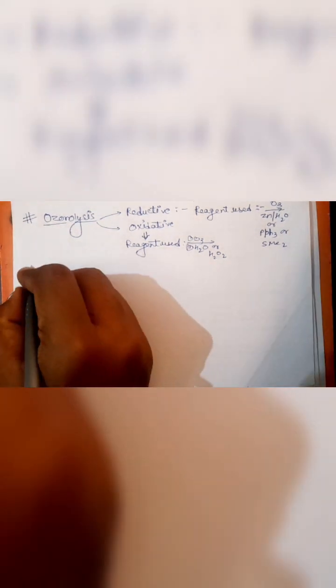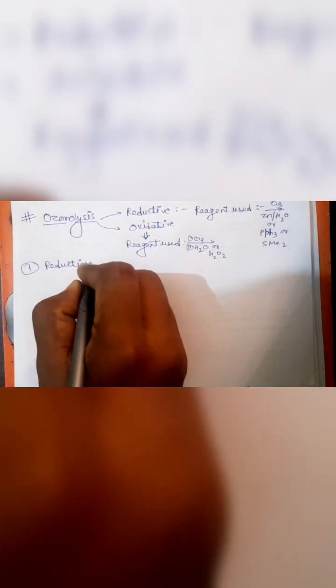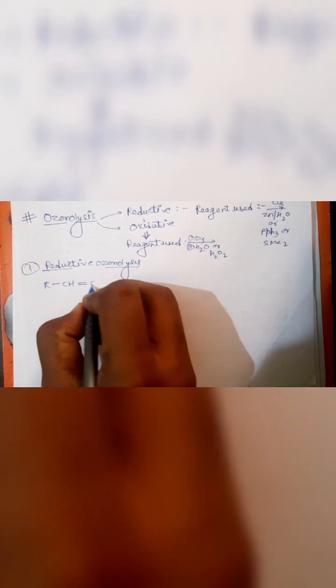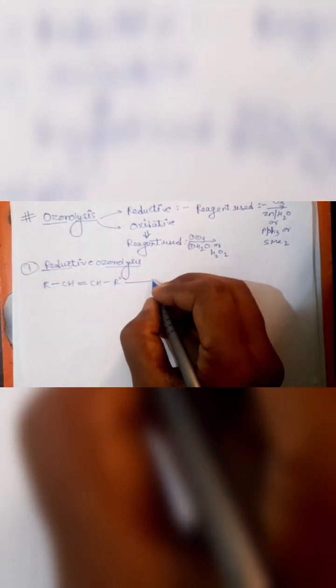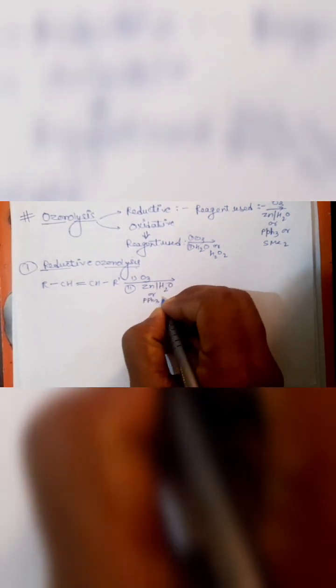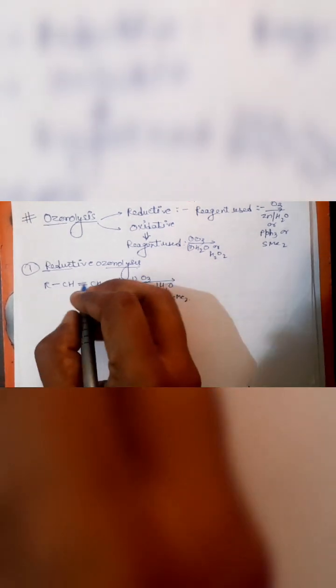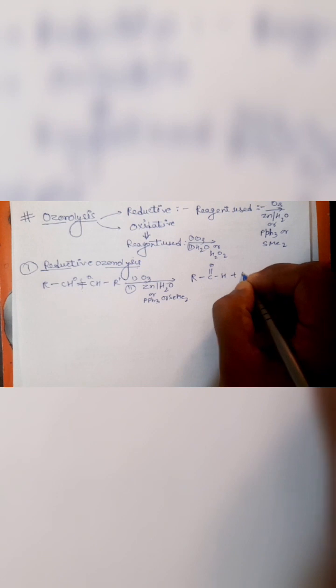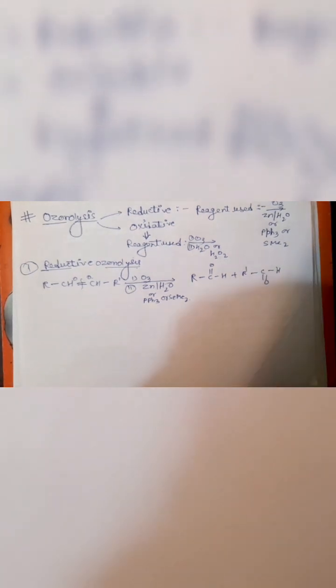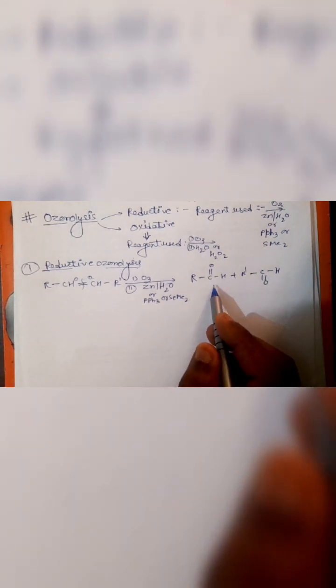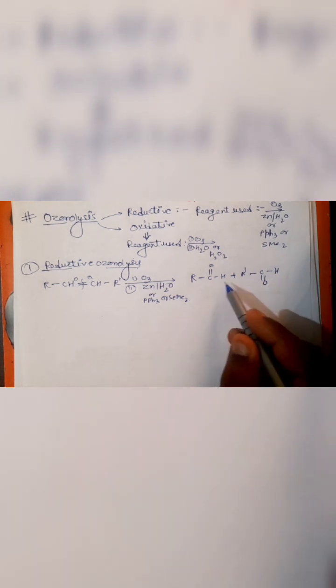These are the two types of ozonolysis we have to learn. First is reductive ozonolysis. In reductive ozonolysis, R-CH double bond CH-R' reacts with O3 and Zn/H2O or PbS or SMe2. What happens is we break the double bond with oxygen atoms. The result formed is R-C double bond O-H and R'-C double bond O-H. One thing to remember is that we break the double bond with oxygen atoms. In reductive ozonolysis, aldehydes are formed.